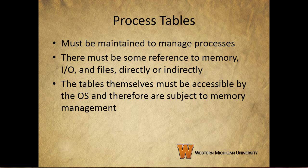Our fourth type of table is the process table. This has to be maintained to manage processes, and there has to be some reference to memory, input-output, and files, directly or indirectly. These tables are distinct, but the tables must be linked or cross-referenced in some fashion. Memory, IO, and files are managed on behalf of processes, so there has to be some reference to these resources in the process tables.